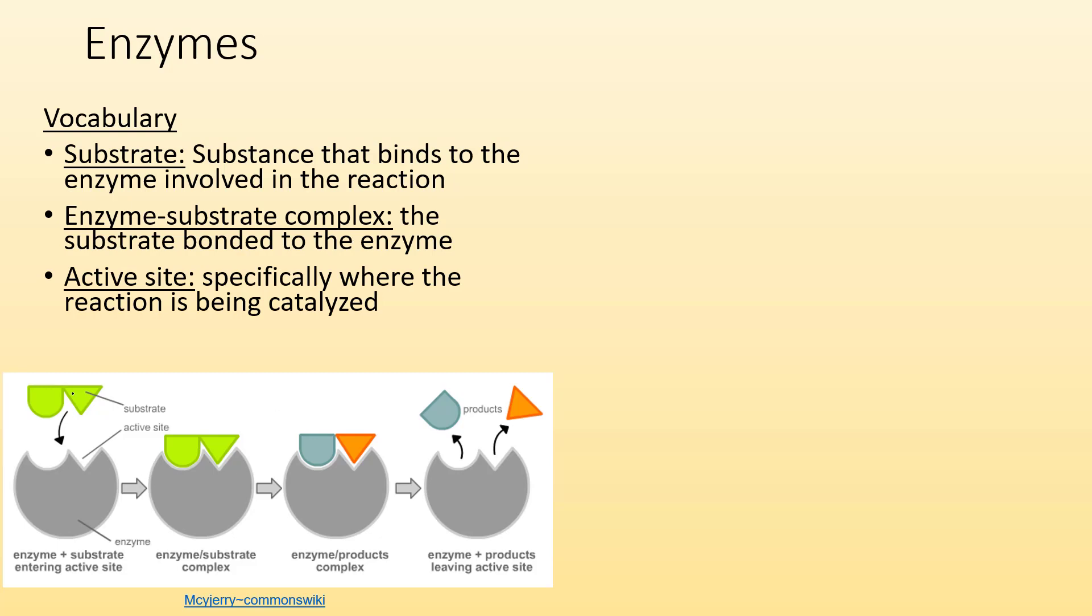If we take a look here, our substrate is the stuff that's binding to the enzyme. This would be our enzyme substrate complex. And the active site is where that process is occurring. So that's where the reaction is occurring. This would be the active site of the enzyme because it's where it's active.